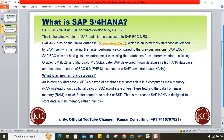If you go way back when SAP started, around 1972, their first version was released — that is SAP R1. Then around 1979 they released R2. Then R3 came, maybe around 1992. R3 is called real-time architecture with presentation layer, application layer, and database. No need to go into deep discussion on those things.